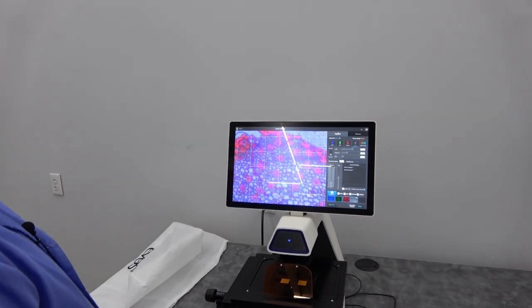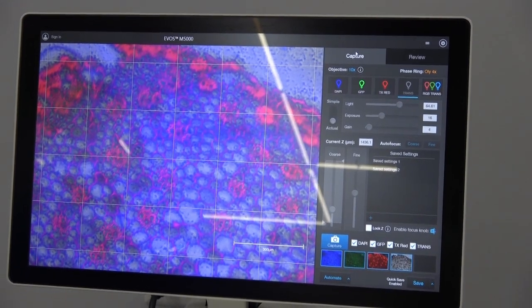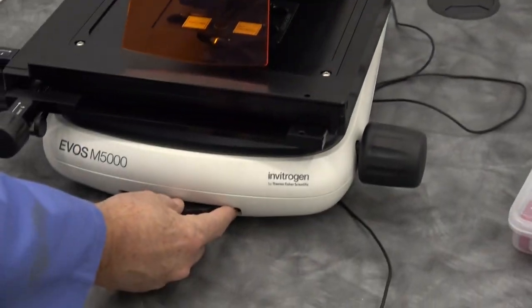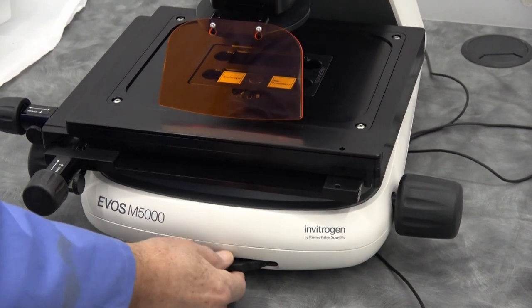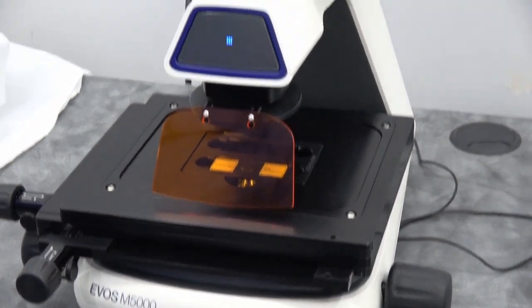There is actually the slide that we have on there right now. To change an objective, your big knob here in the front will allow it to change to your different image.